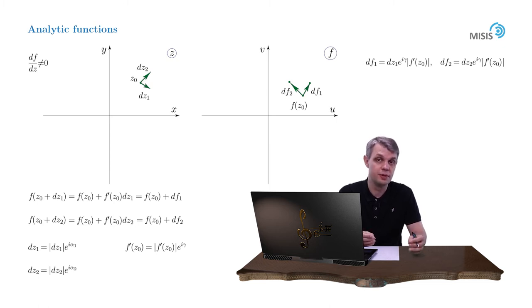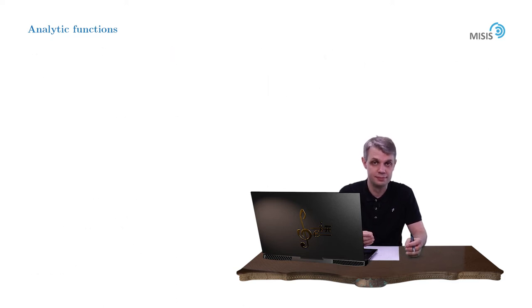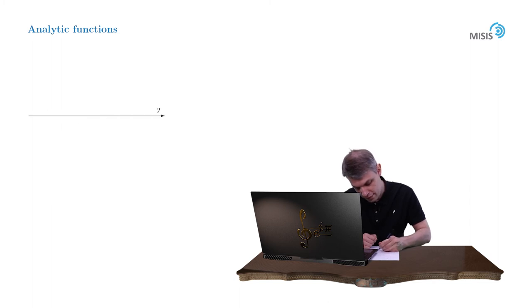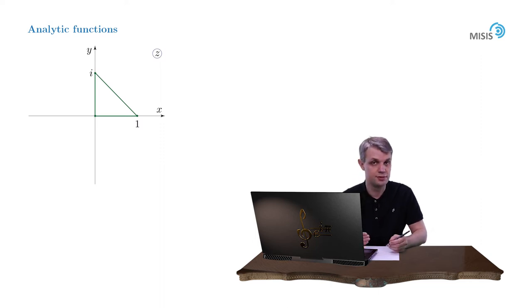And the change of variables will always be a conformal mapping. So let us see how this works on some simple example. We consider a right isosceles triangle with vertices at the origin and at points 1 and i in a complex plane of z. And let us see how this triangle is transformed under conformal transformation made by function z squared.